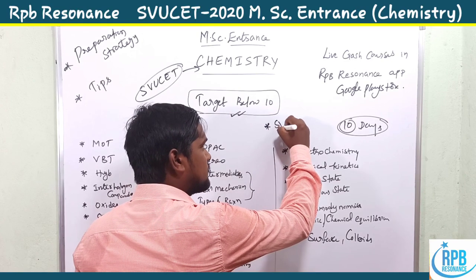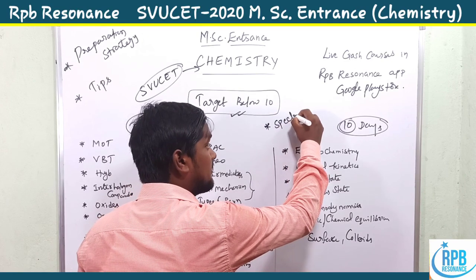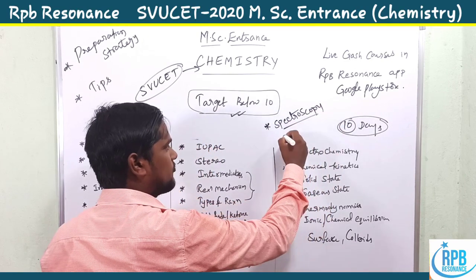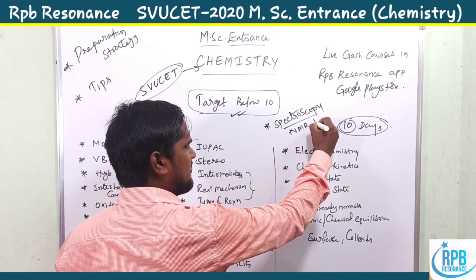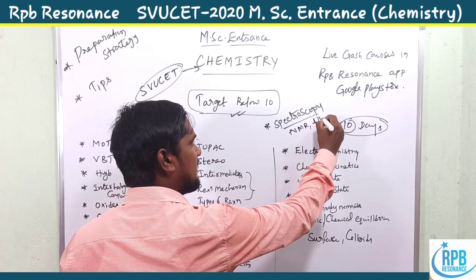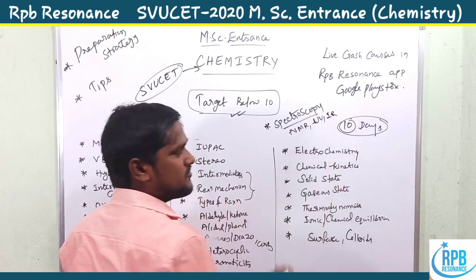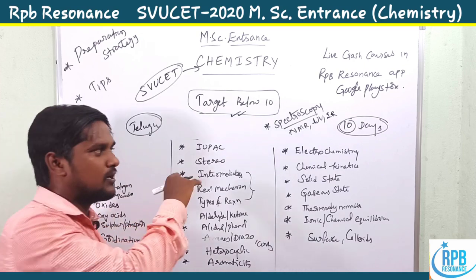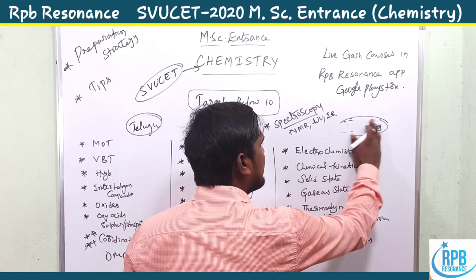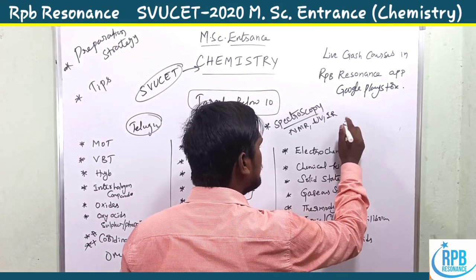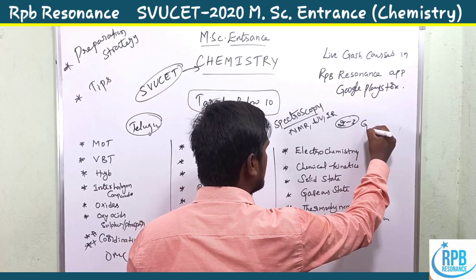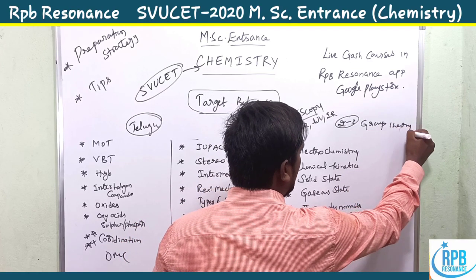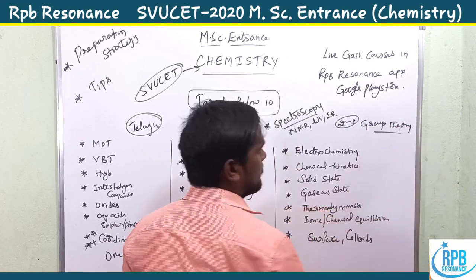There will be 10 questions related to spectroscopy — specifically NMR, IR, and all the basic spectroscopy content covered in the class course. Additionally, there will be two to three questions from group theory, based on analysis of previous year papers.